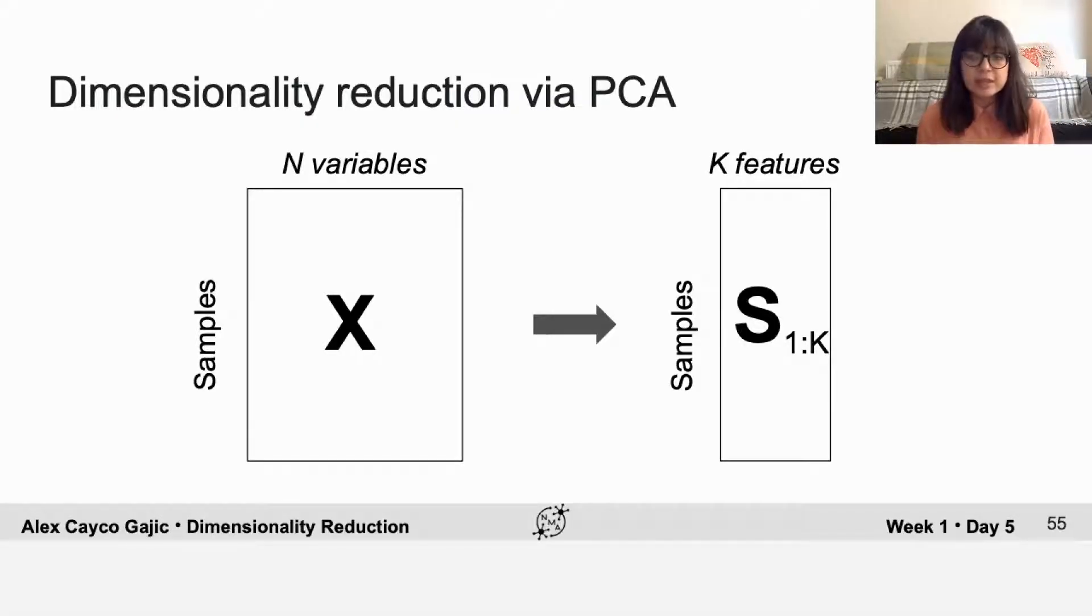So we can just take the first K columns of the score matrix, and I'll call that S sub 1 through K. That gives us the lower dimensional representation of the data that explains as much variance as possible. But the real question now is how do you choose K?